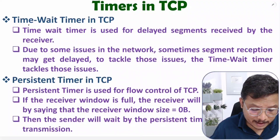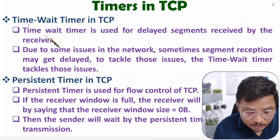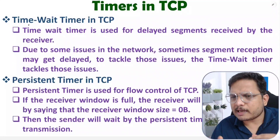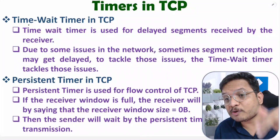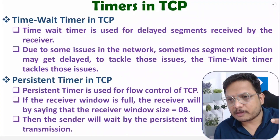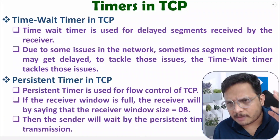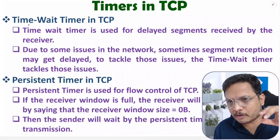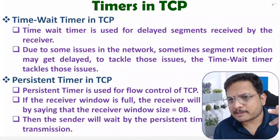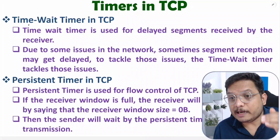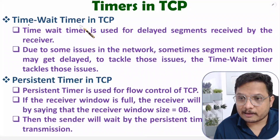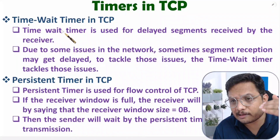The time-wait timer is used for delayed segments received by a receiver. In a computer network, there is always the possibility that some segments may be received with some delay. This can happen due to congestion in the network or because routers are very busy during data transfer. The time-wait timer tackles all issues regarding such delayed received segments.